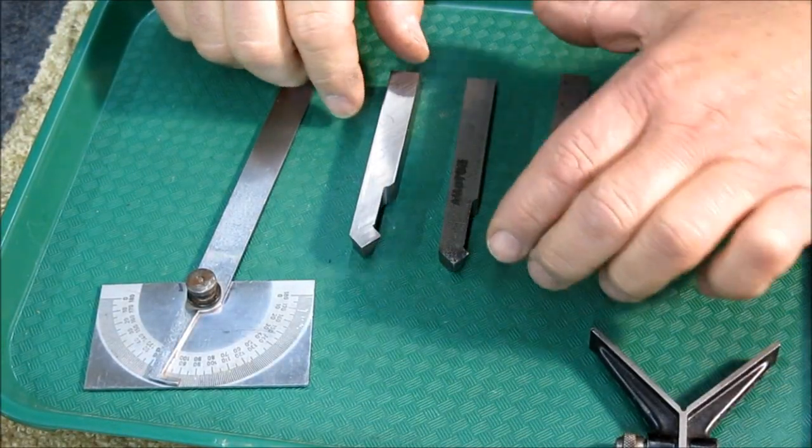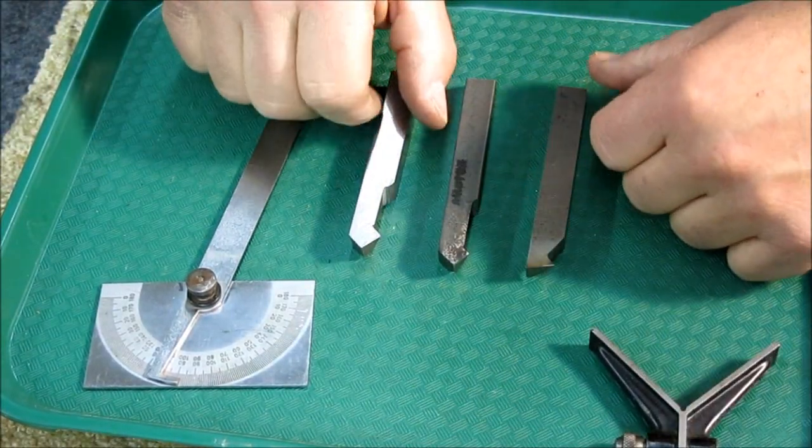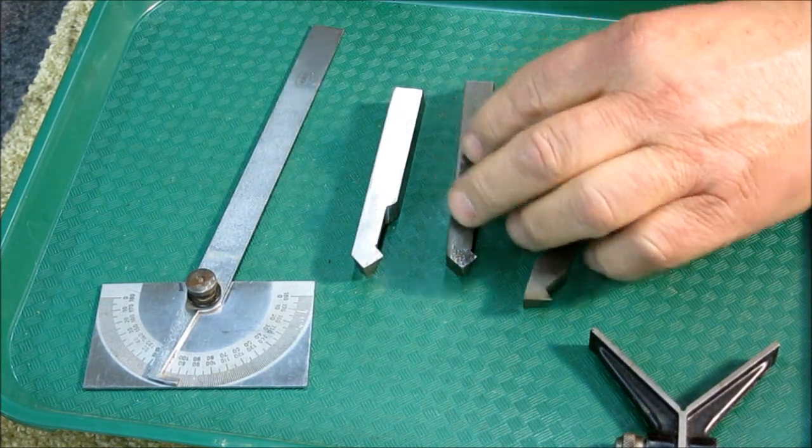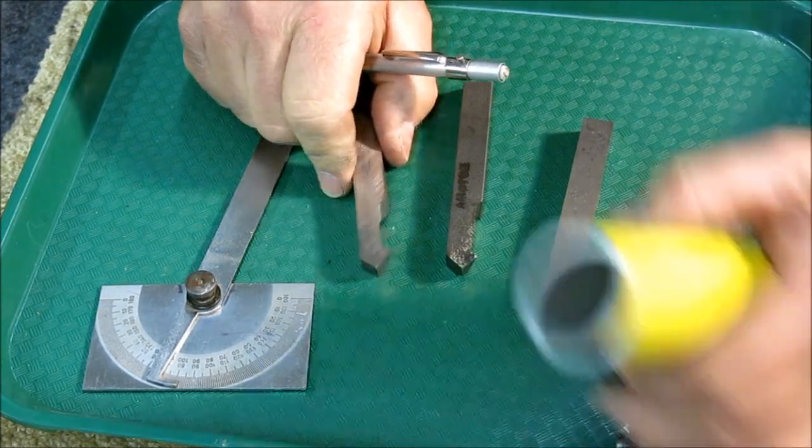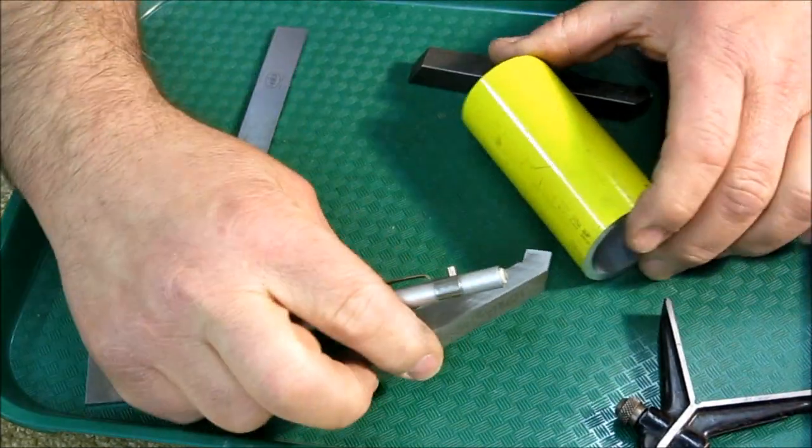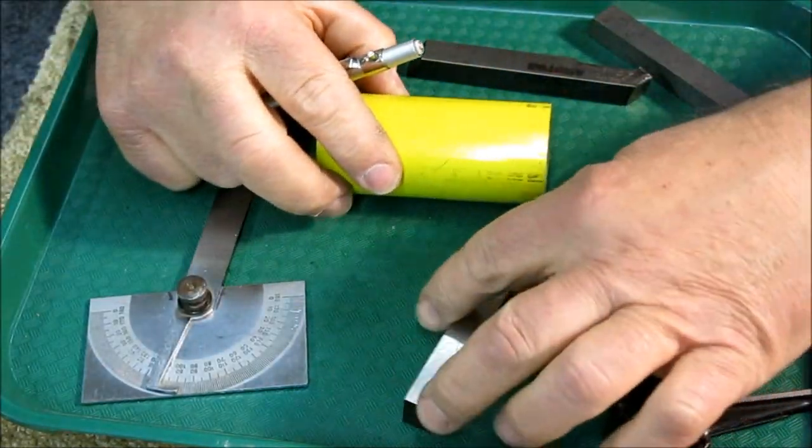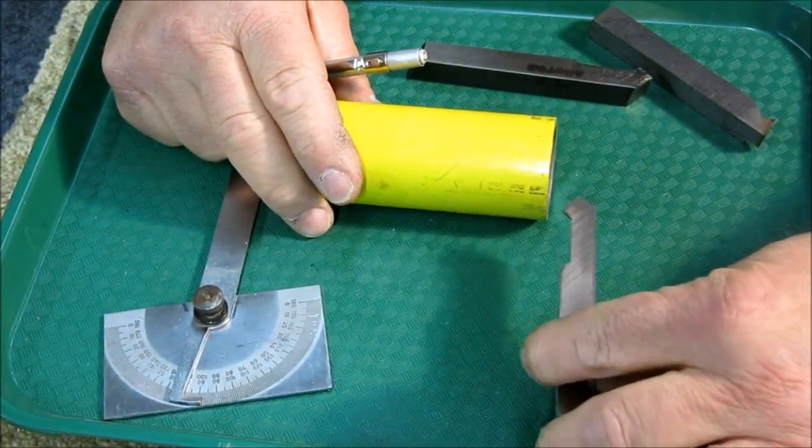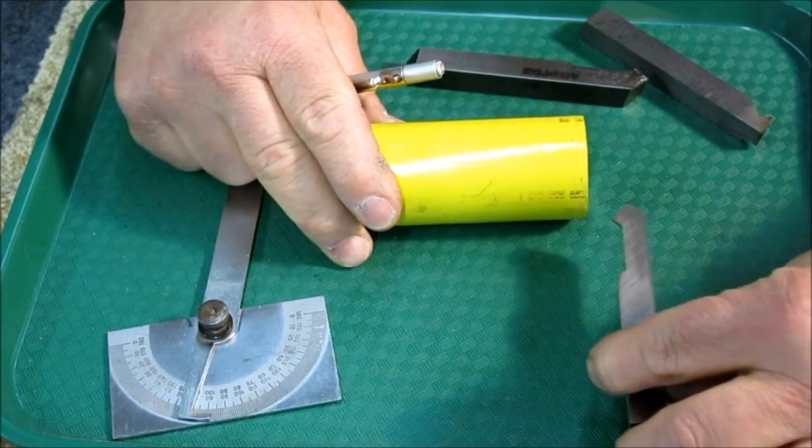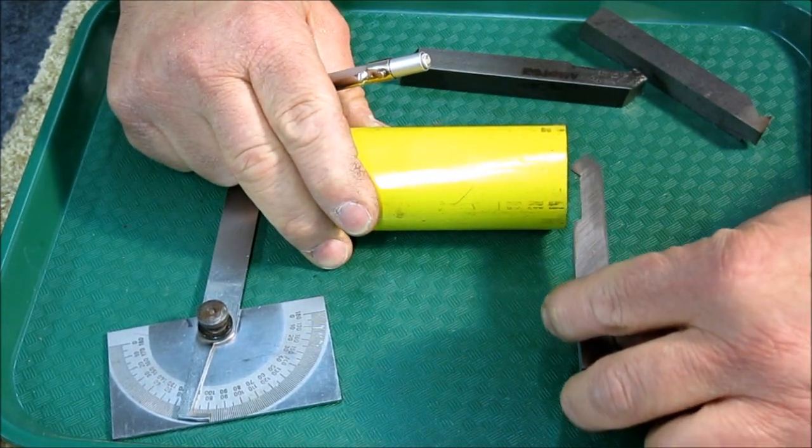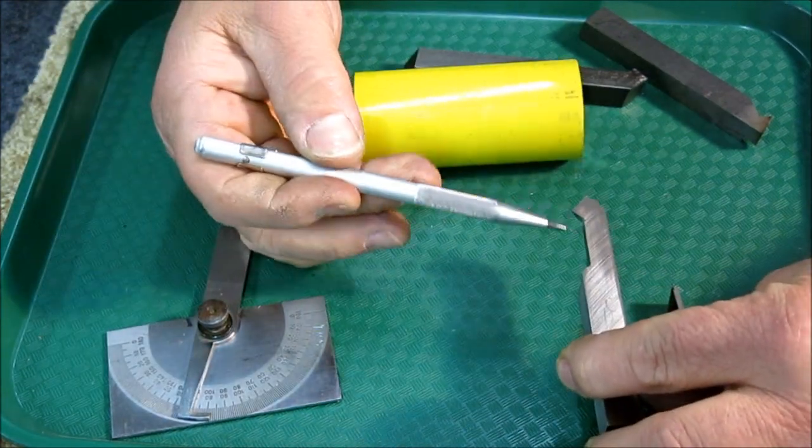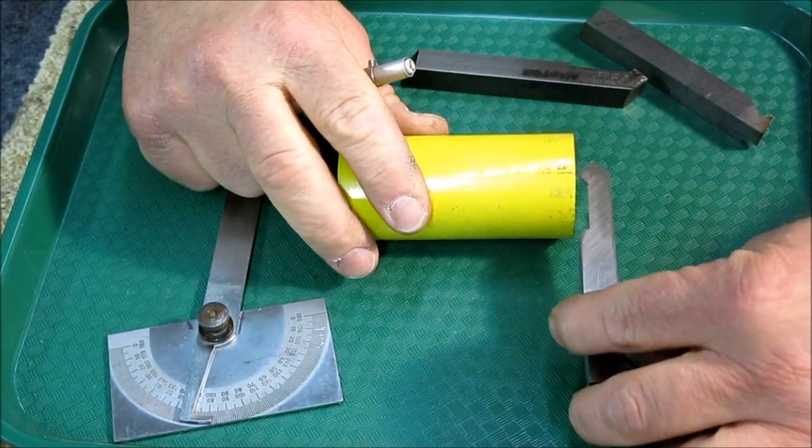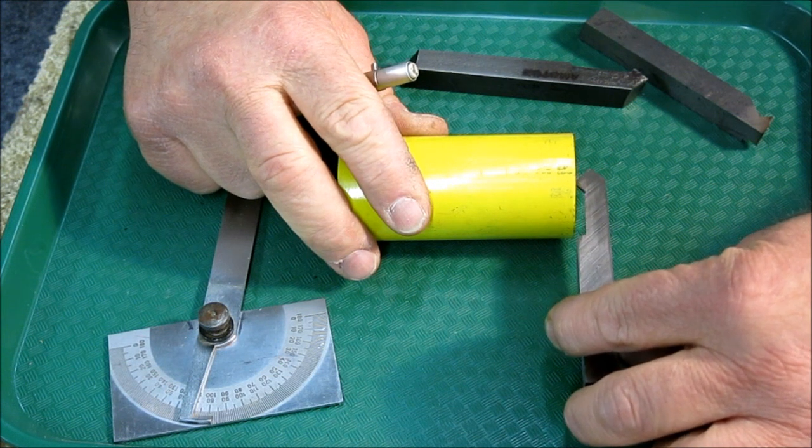Okay, so these are these combo tool bits here that I showed before. And so what these do is in the lathe, we can face up to that radius right there from that corner right there up to there. So we can face a radius up to that big.